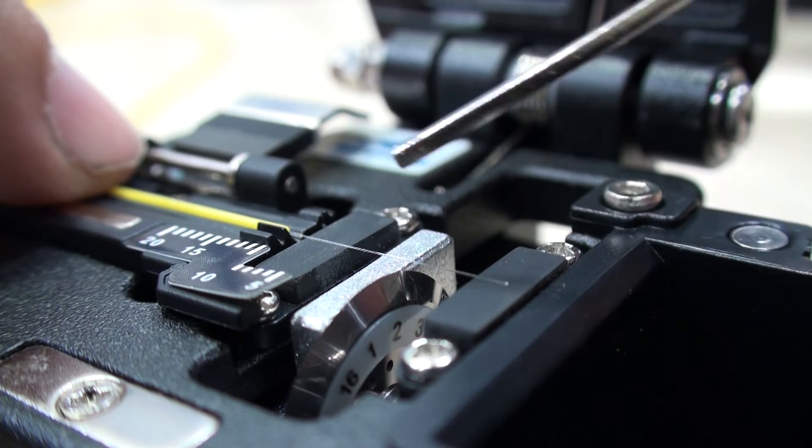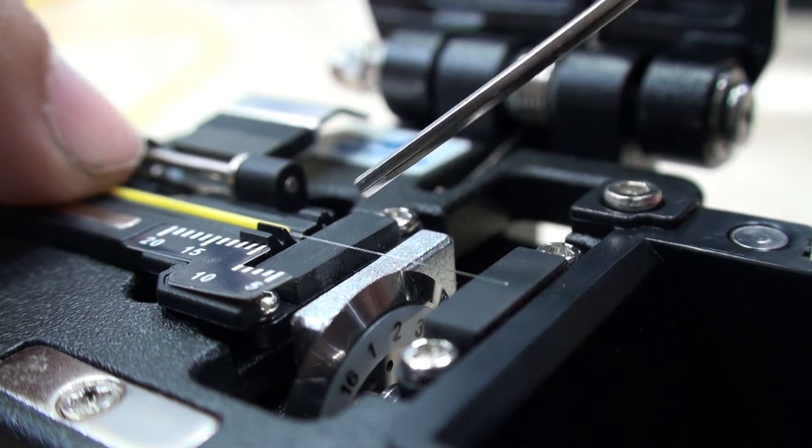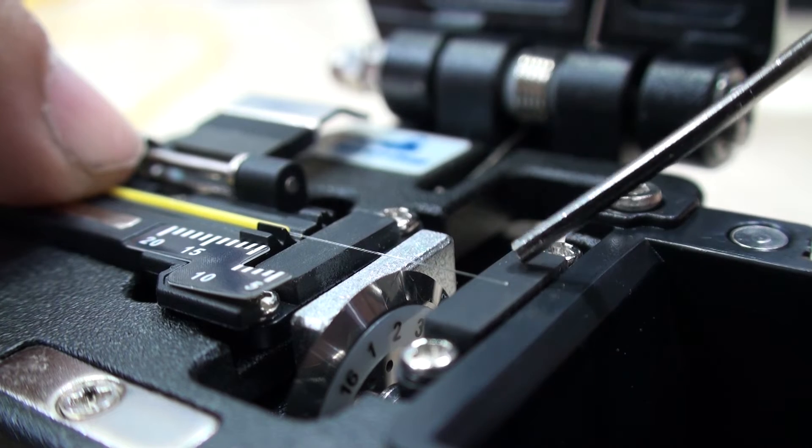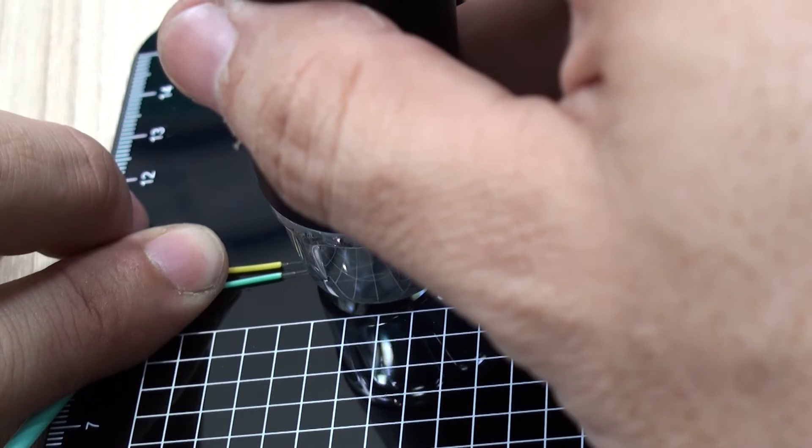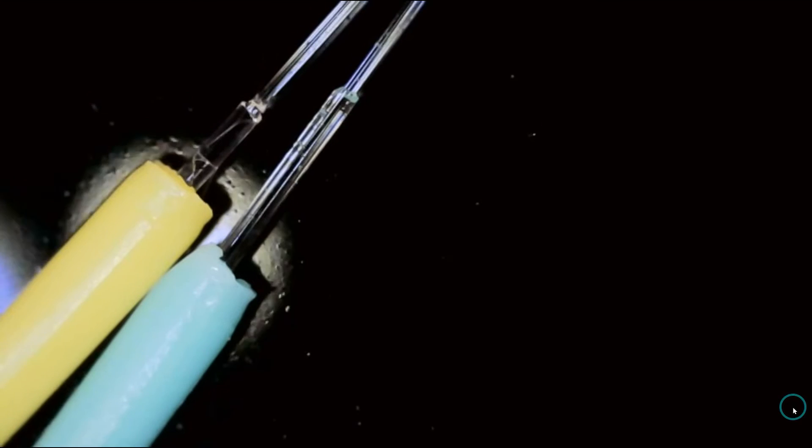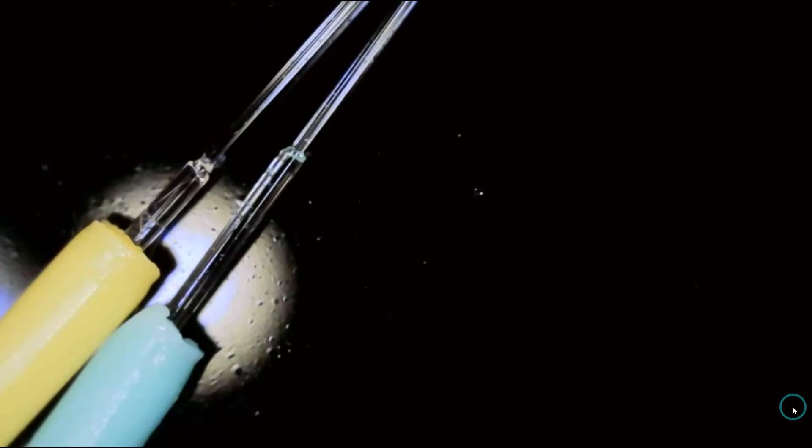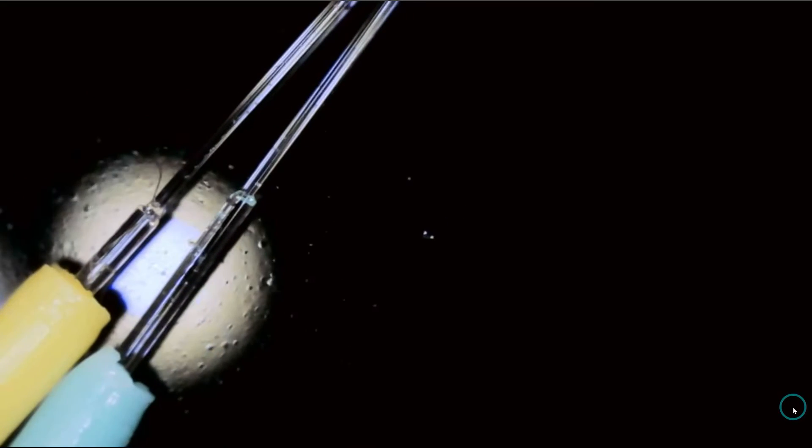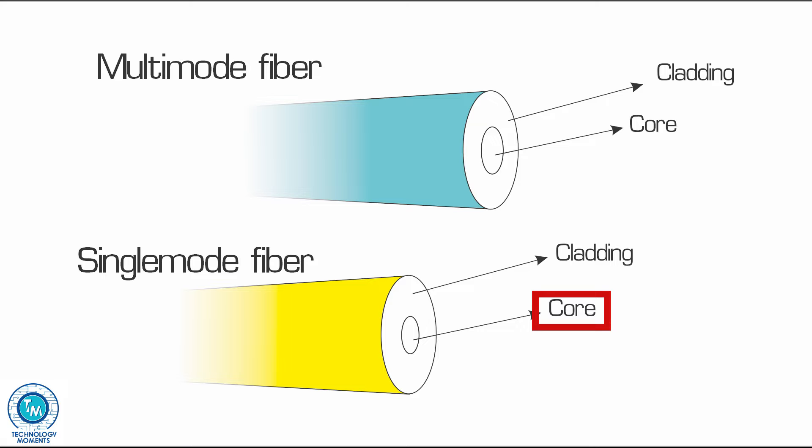You can do this procedure either for single mode fiber or multi-mode fiber. It doesn't matter. Actually this splicer works for both. The diameter of both fibers including the cladding is the same. This is something that a lot of people do not understand. What is substantially different is the core of the fiber, the real glass fiber. The cladding is a glass-like polymer in charge of keeping the light inside of the fiber core as much as possible. Its quality is as important as the quality of the core.